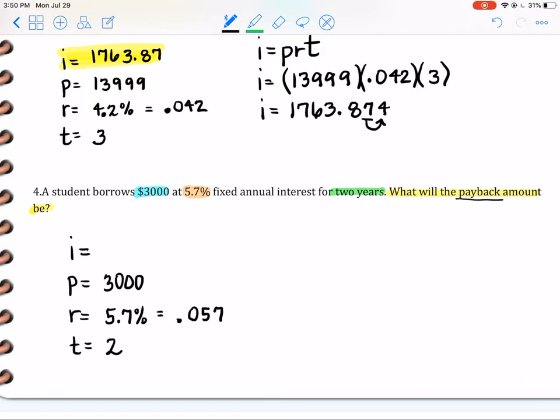I equals PRT. I equals principal, rate, time. Calculator: 3,000 times 0.057 times 2. I'm getting interest of $342.